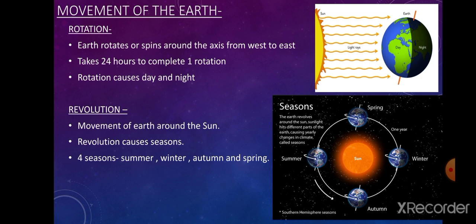The Earth experiences a cycle of four seasons every year: summer, autumn, winter, and spring. The Earth is tilted on its axis at an angle of 23.5 degrees while revolving. When the northern hemisphere is tilted towards the sun, the southern hemisphere is tilted away, causing the northern hemisphere to experience summer and the southern hemisphere to experience winter. After six months it reverses. In between summer and winter, Earth experiences two more seasons — autumn and spring — which are neither too hot nor too cold.